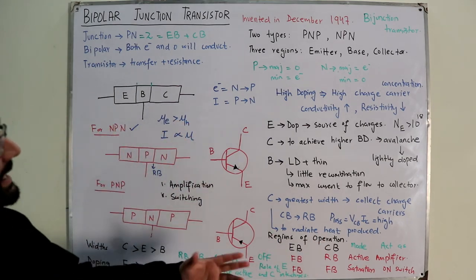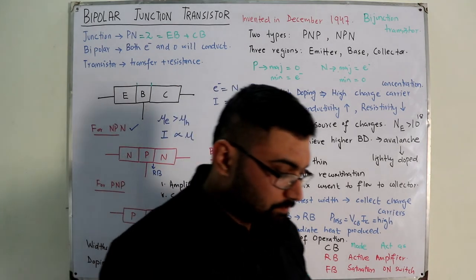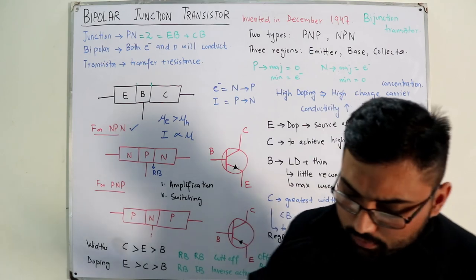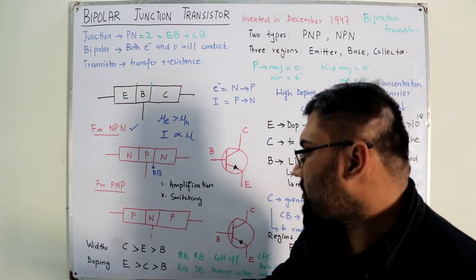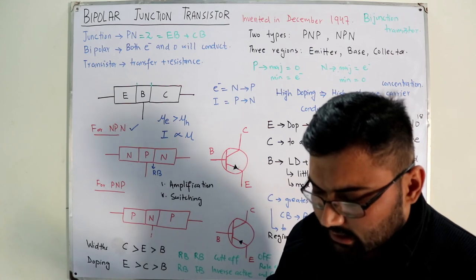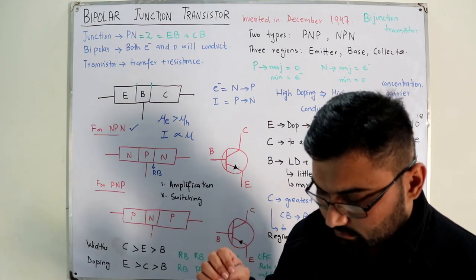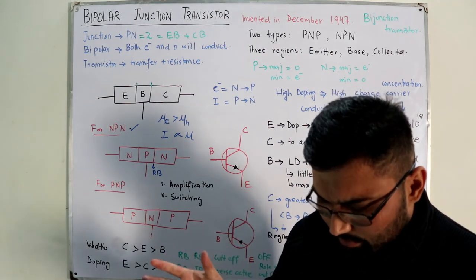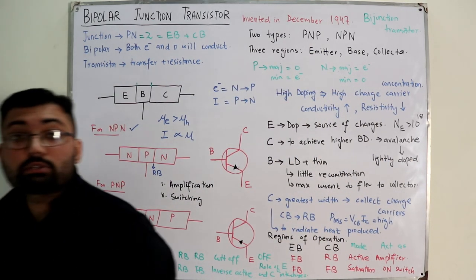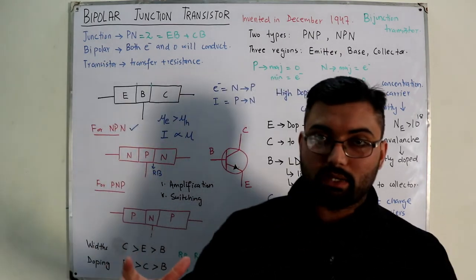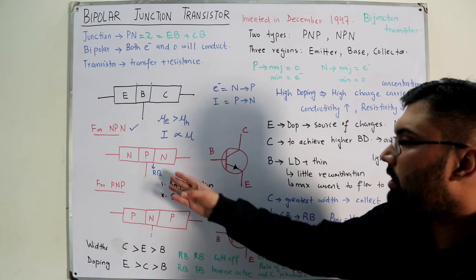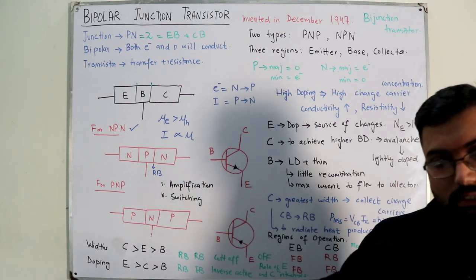We will see this in greater detail in upcoming videos. The emitter layer is heavily doped while the base and collector are only lightly doped. The outer layers have much greater width than the sandwiched base layer. We have now covered bipolar junction transistor construction, doping, widths, symbols, and regions of operation.